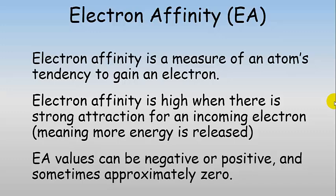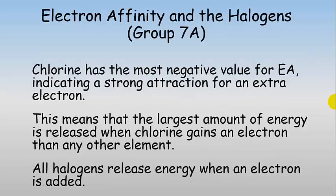Electron affinity is high when there's a strong attraction for an incoming electron, meaning more energy is released — that corresponds to a negative electron affinity. Electron affinity values can be negative, positive, or sometimes approximately zero. Sometimes you have to put energy in to give an atom an extra electron, which makes it less stable. Chlorine has the most negative value for electron affinity, meaning it releases the most energy when an extra electron is gained to form a chloride anion.